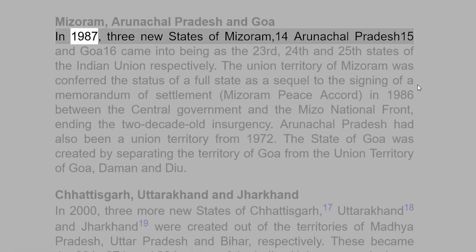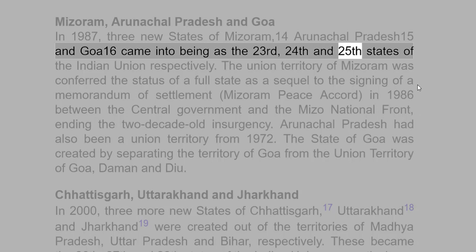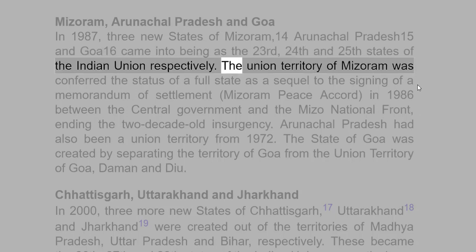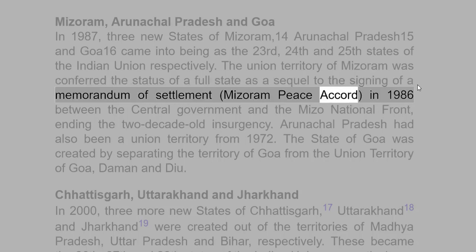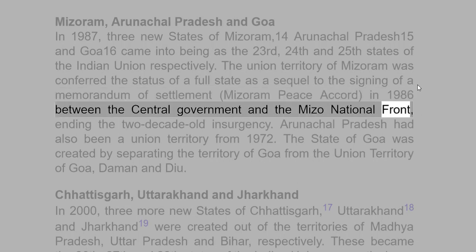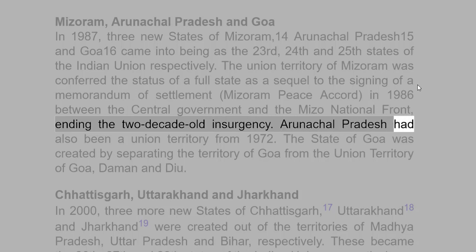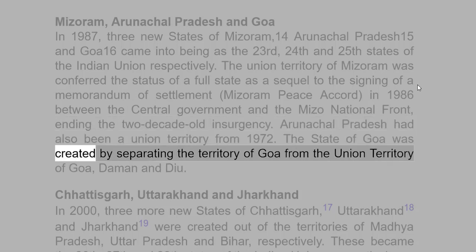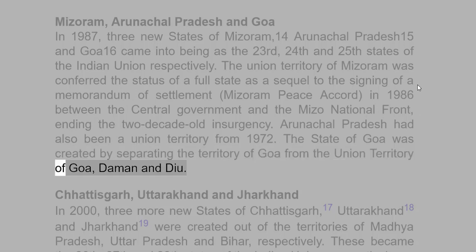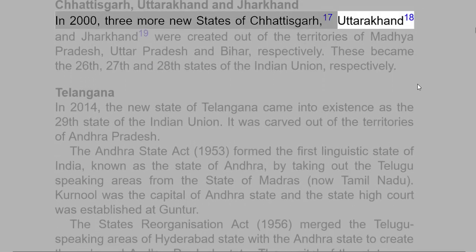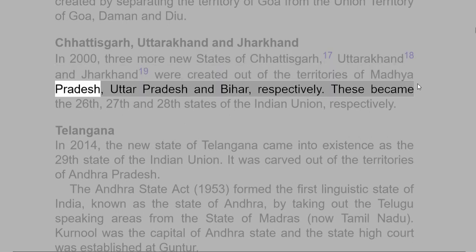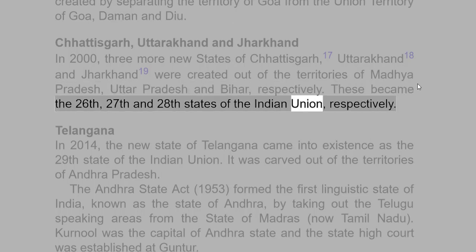In 1987, three new states of Mizoram (23rd), Arunachal Pradesh (24th) and Goa (25th) came into being. The Union territory of Mizoram was conferred the status of a full state following the signing of the Mizoram Peace Accord in 1986 between the Central Government and the Mizoram National Front, ending the two-decade-old insurgency. Arunachal Pradesh had also been a Union territory from 1972. The state of Goa was created by separating the territory of Goa from the Union territory of Goa, Daman and Diu. In 2000, three more new states — Chhattisgarh (26th), Uttarakhand (27th) and Jharkhand (28th) — were created out of the territories of Madhya Pradesh, Uttar Pradesh and Bihar, respectively.